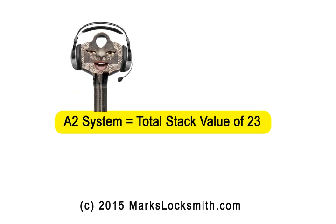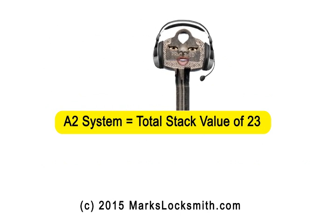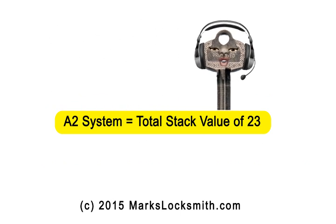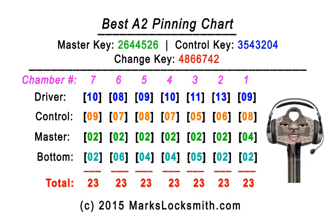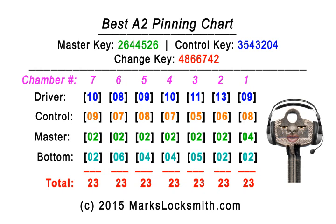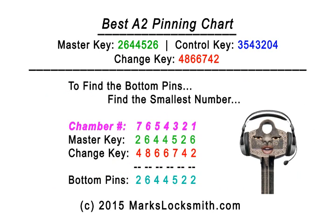Let's get started. I'll be using the A2 system total stack value of 23. This is what your pinning chart should look like if you use the same information as I did for my master key, control key, and change key. Now let's find the bottom pin. In chamber seven we have two and four.